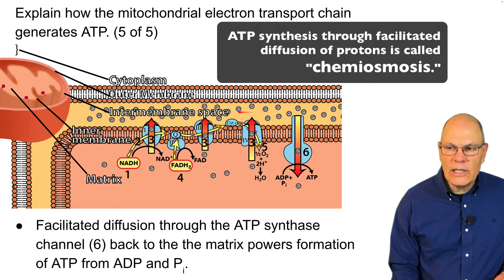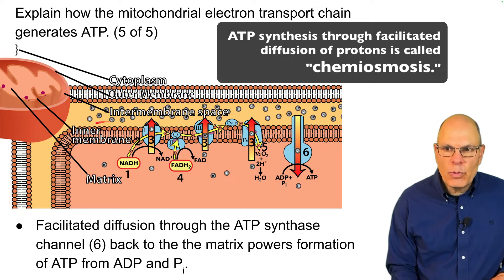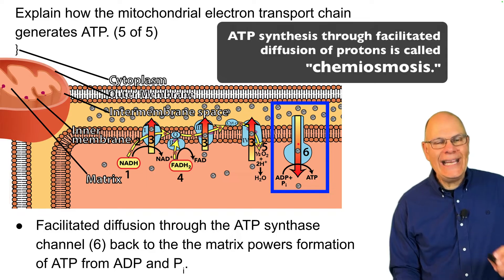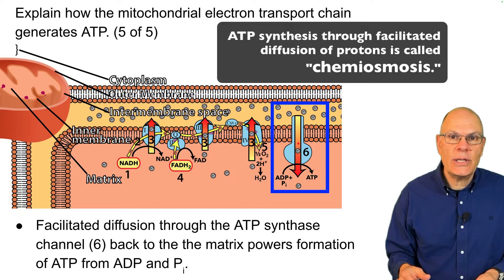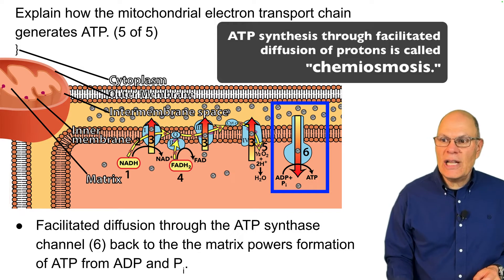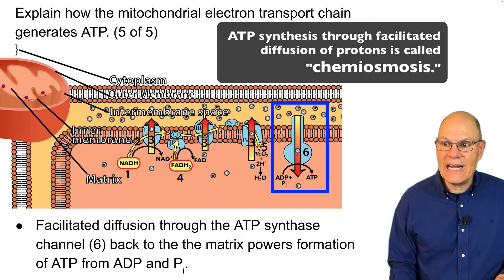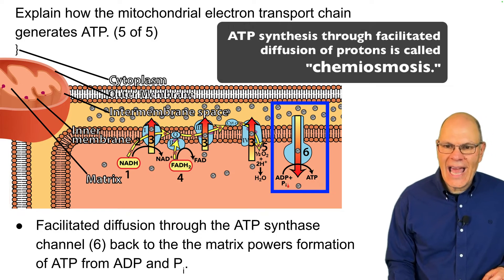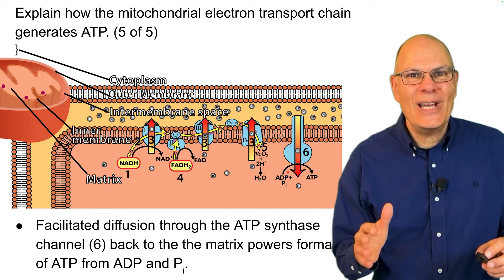All of these protons have accumulated in the intermembrane space. They can't diffuse through any part of the inner membrane except through one channel — that's called ATP synthase, the same as we discussed in photosynthesis. It's both a channel and an enzyme. As protons diffuse through — that's facilitated diffusion — their kinetic energy is used to create ATP from ADP and phosphate. That's how the electron transport chain generates ATP.